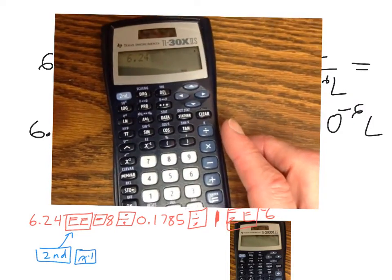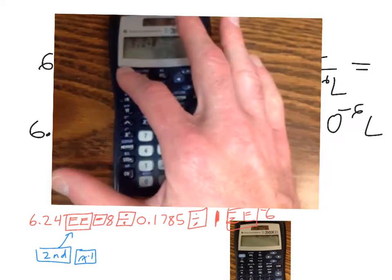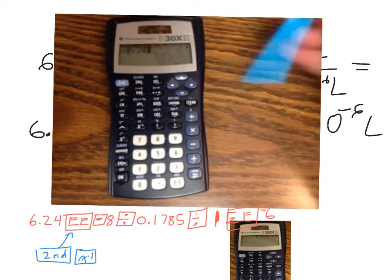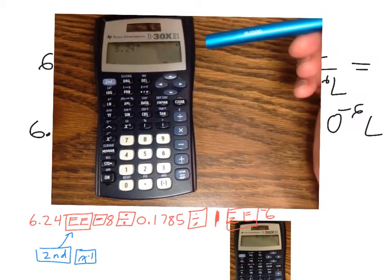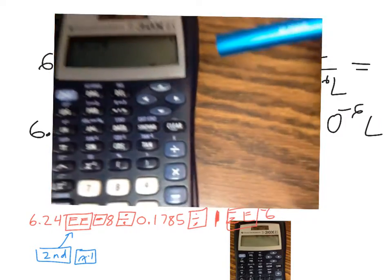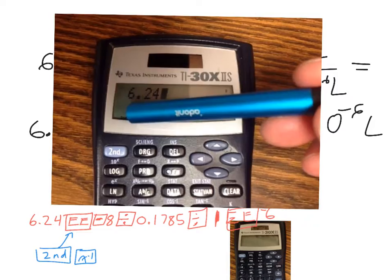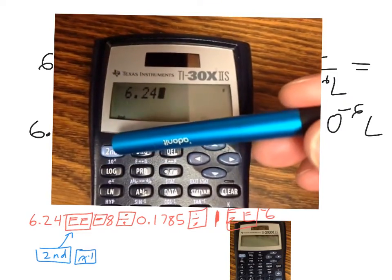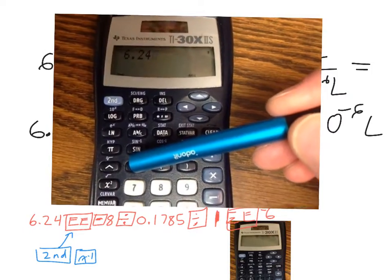All right, now I need to enter that EE. So to get my EE, I'm going to hit my 2nd key. So I hit 2nd, and when you hit 2nd, see that 2nd appears in that lower window right there, letting you know that you've hit the 2nd key. Then I come to my X to the negative 1. I hit it once.